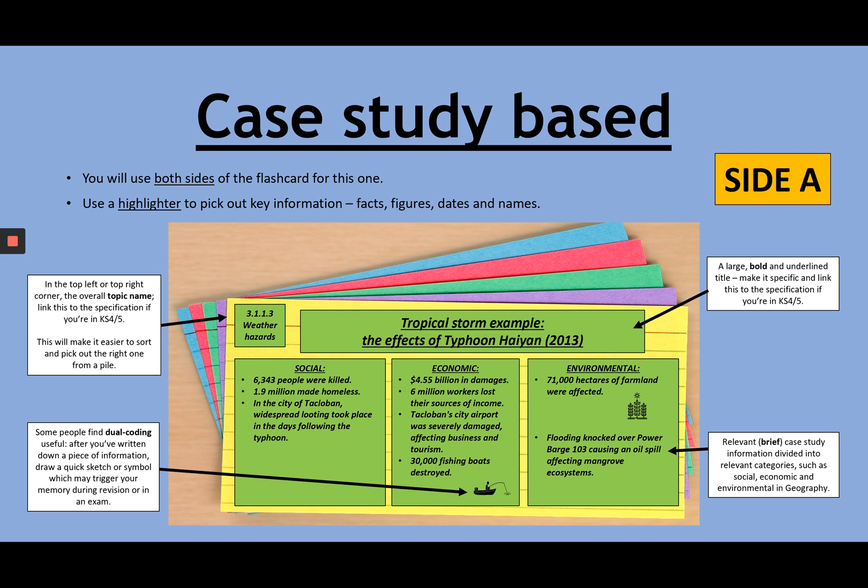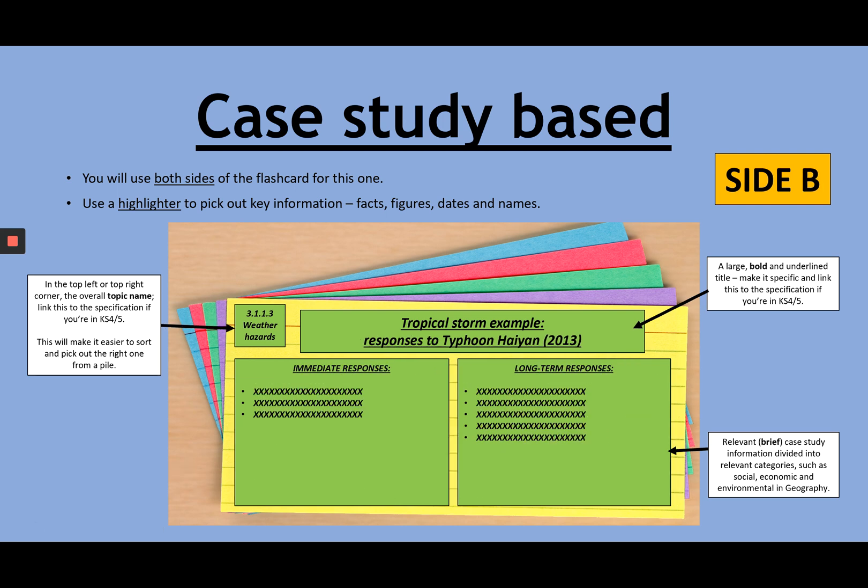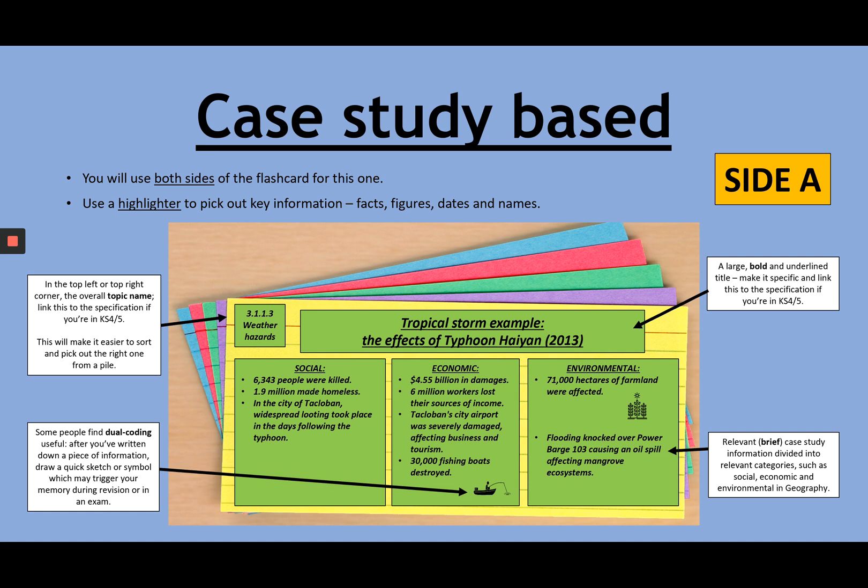So that's explained side A. Side B just covers the rest of the case study. Now we're going to leave this video here because we've gone through an example, but in subsequent videos, I will take you through examples from the specification. But I feel like I've done that well enough here by linking it to the Typhoon example for GCSE geography. So hopefully that's been useful for you in studying case study-based flashcards. That is one of five which we're going to go through in this series.